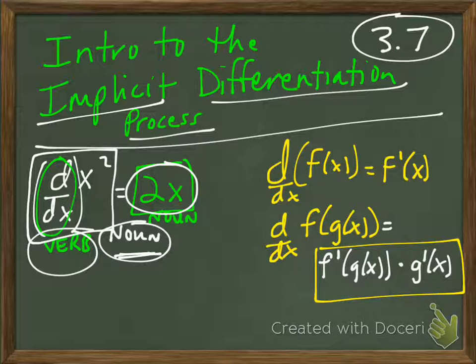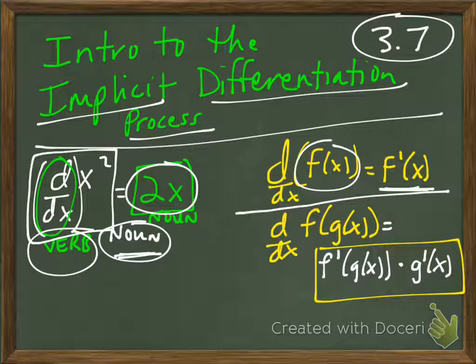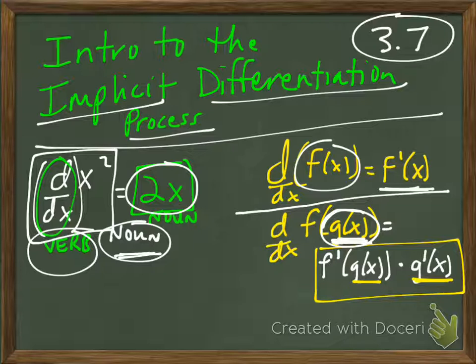You're hopefully already feeling pretty comfortable finding derivatives, using the power rule especially. Then you learned the general notation for derivatives: the derivative of f(x) is written as f′(x). And then you learned the chain rule — that the derivative of f(g(x)), when the inside is not just x, means we have to multiply by the derivative of that inside function. That's just reiterating the chain rule.